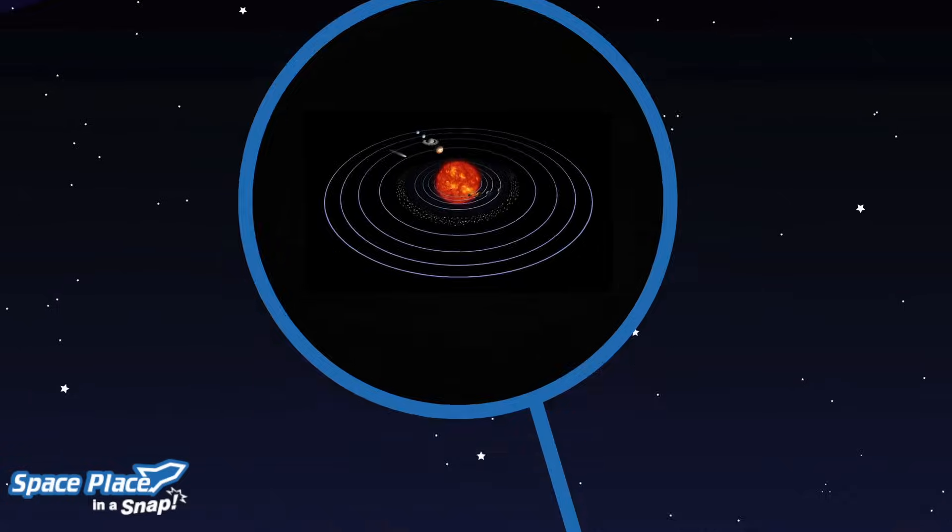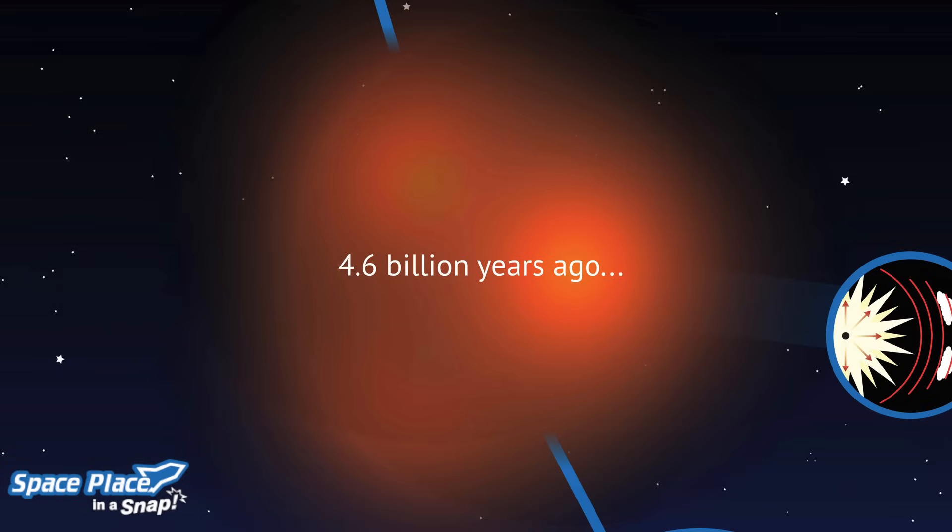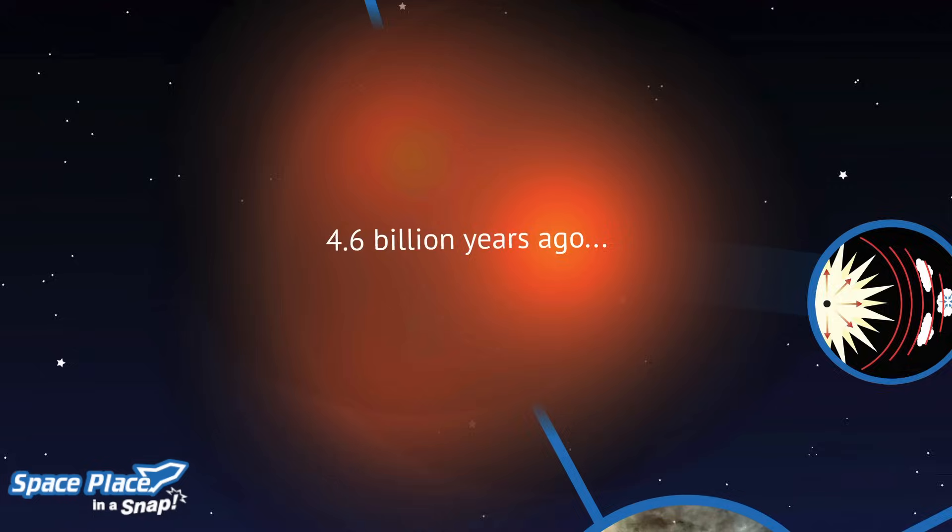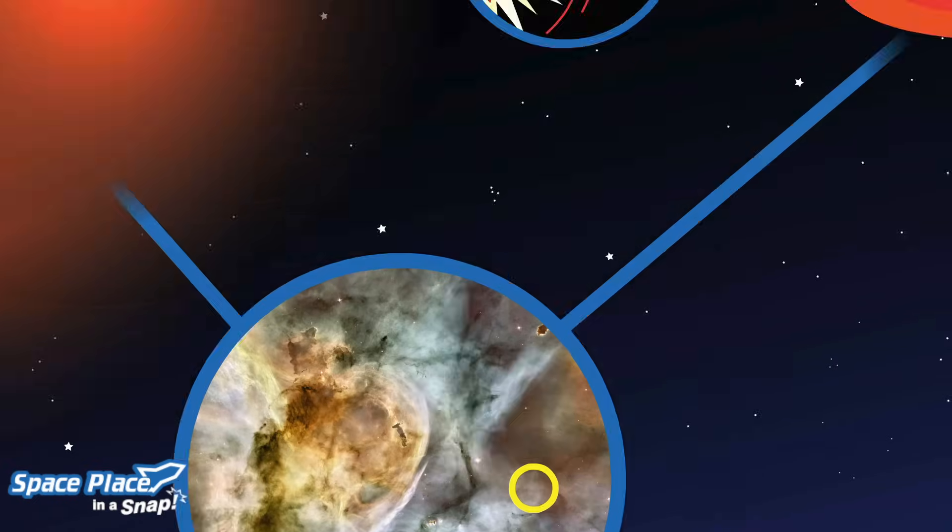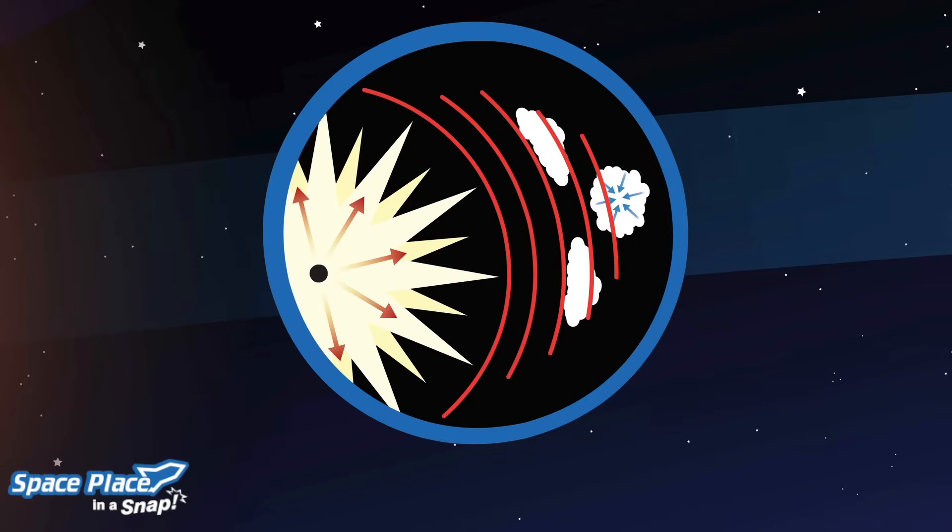Our story starts about 4.6 billion years ago with a wispy cloud of stellar dust. This cloud was part of a bigger cloud called a nebula. At some point, the cloud collapsed, possibly because the shockwave of a nearby exploding star caused it to compress.